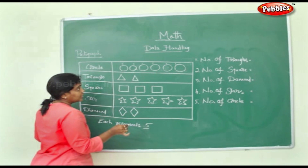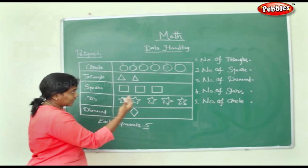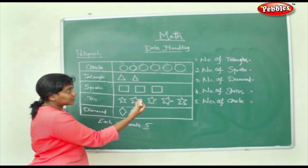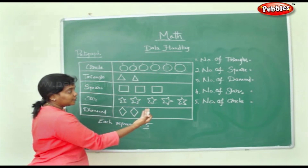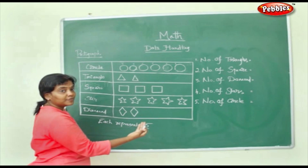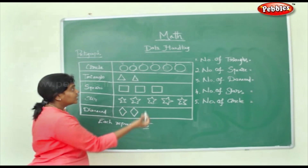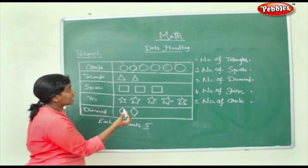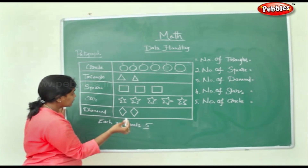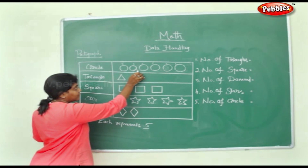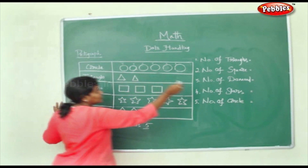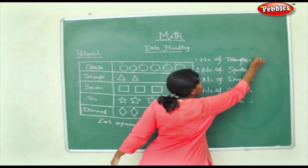We'll have to find out the number of triangles, number of squares, number of diamonds, number of stars, and number of circles. Let's take the number of triangles first. Each represents 5, so 5 plus 5 — 10 triangles.